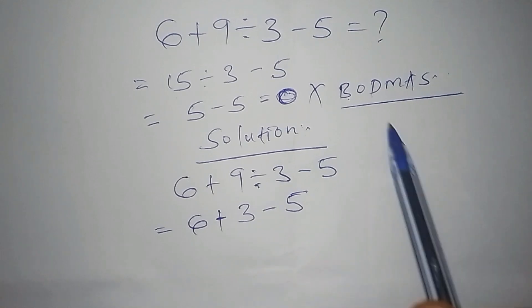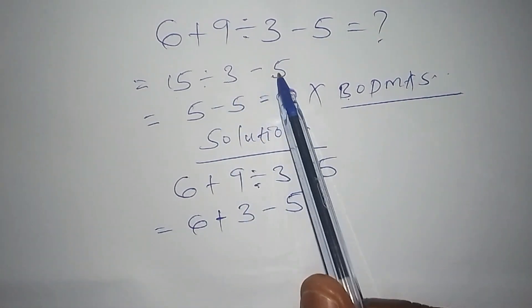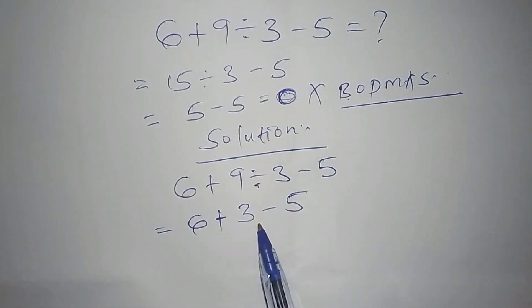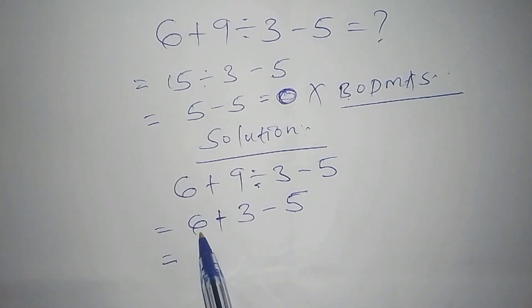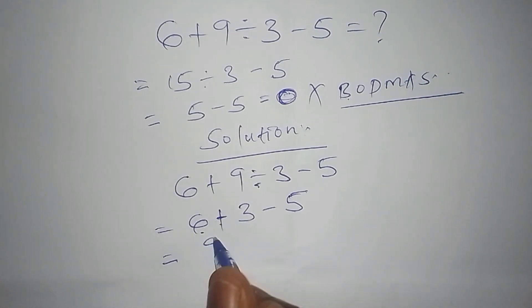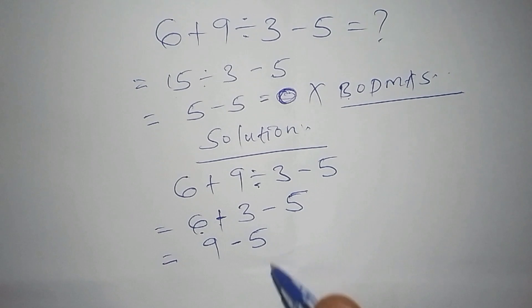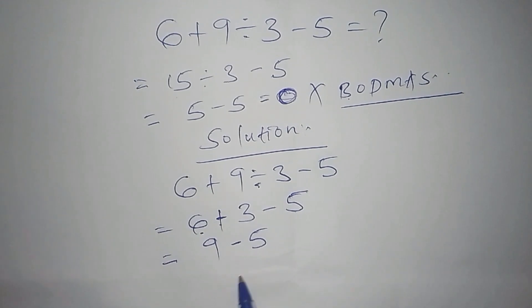My step is different from the initial step that I used here. I have to move to the second step. My second step: 6 plus 3, and 6 plus 3 we know is 9, then 9 minus 5. Once you've reached that level, we now have 9 minus 5. This is the last step. So 9 minus 5, we shall get our answer as 4.